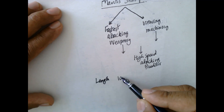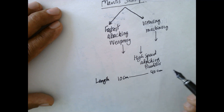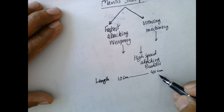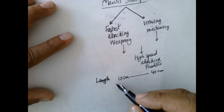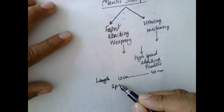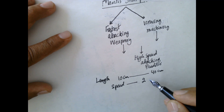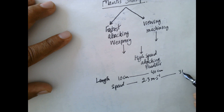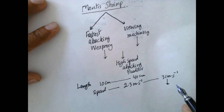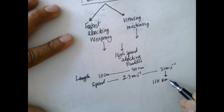The length varies from 10 centimeters to 40 centimeters. The important feature is the speed with which it attacks — the speed varies from 2.3 meters per second to 31 meters per second, which means it has a speed of about 110 kilometers per hour.